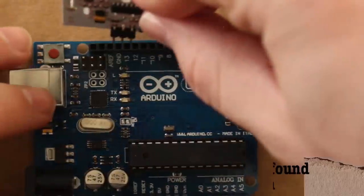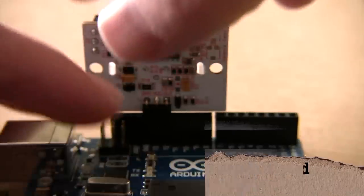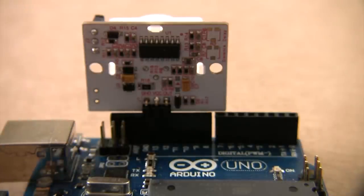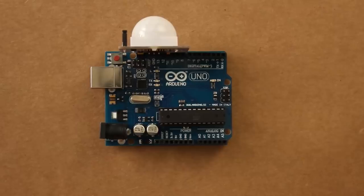Next we wire up the PIR motion sensor. It's pretty simple. These three pins go here, ground, 13, and 12.